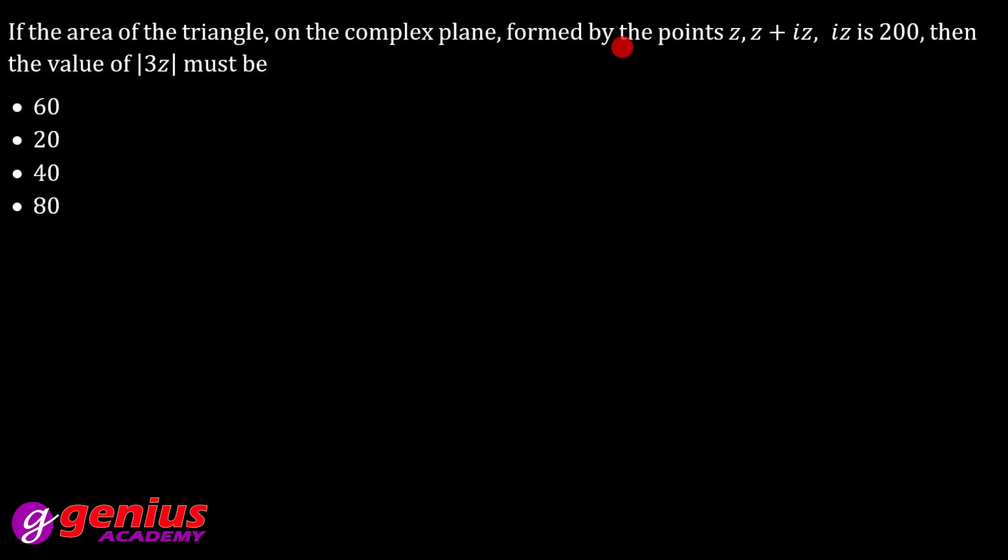The area of the triangle on the complex plane formed by the points. Area diya hai 200. So z is equal to x plus iota y. Iota z kitna ho jayega? Iota se multiply, so ye ho jayega minus y plus iota x. And third z plus iota z: x minus y plus iota (x plus y).